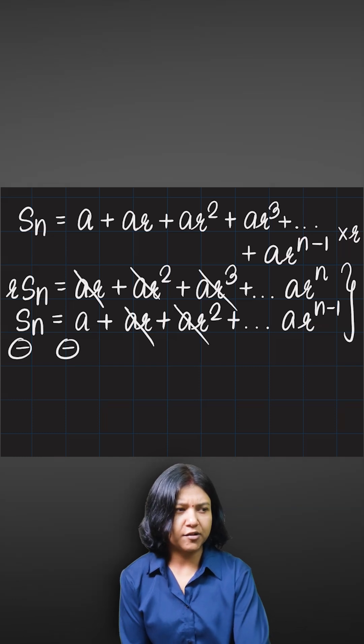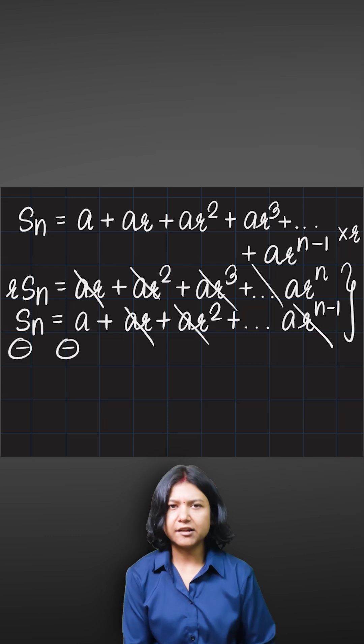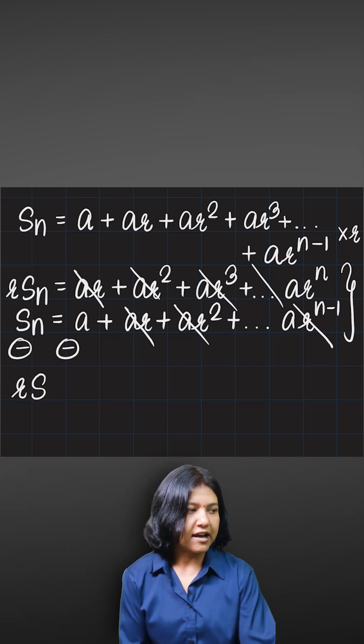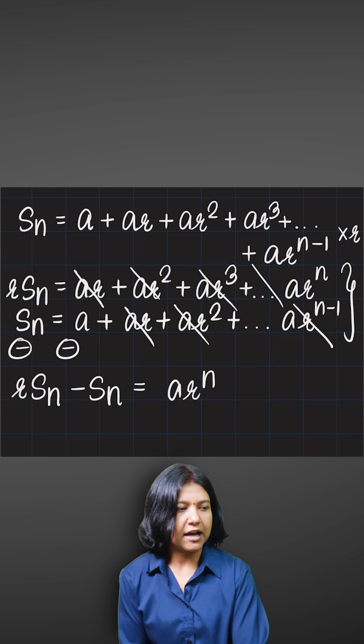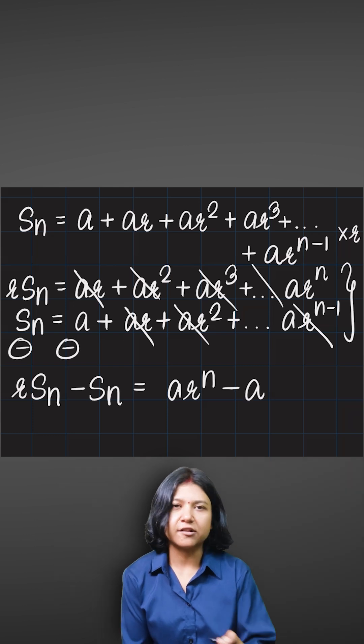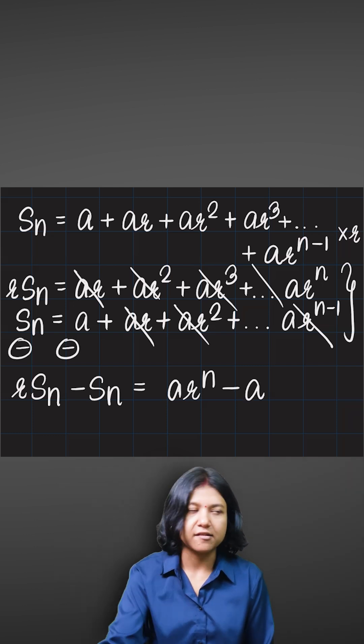Every term will cancel out like this. Everything will cancel out. ar to the power of n minus one obviously will cancel out somewhere. Thereby, subtracting on the left side, I have r·Sn minus Sn, which should be equal to a·r to the power of n and the first term a, because these are the only two terms that did not get cancelled out.